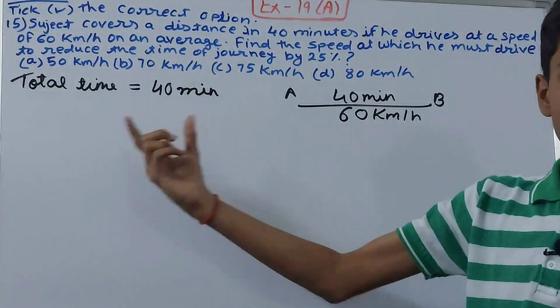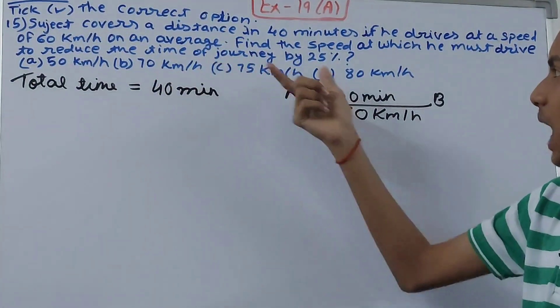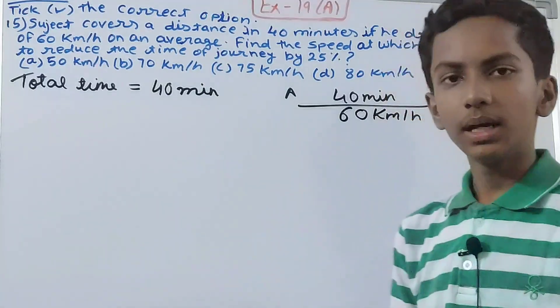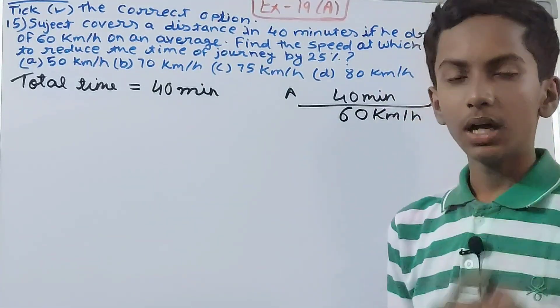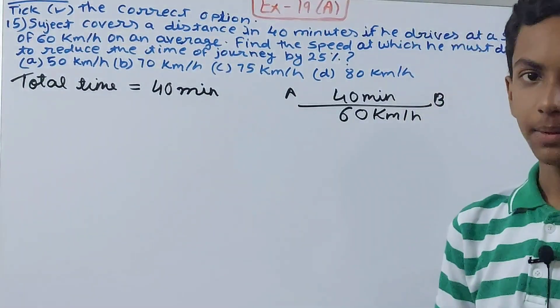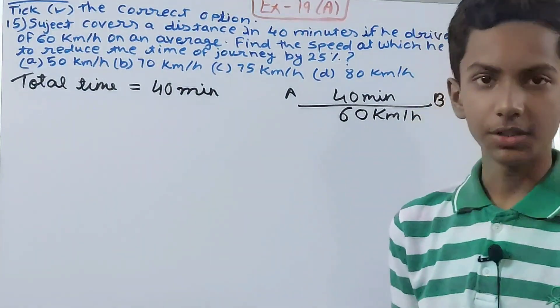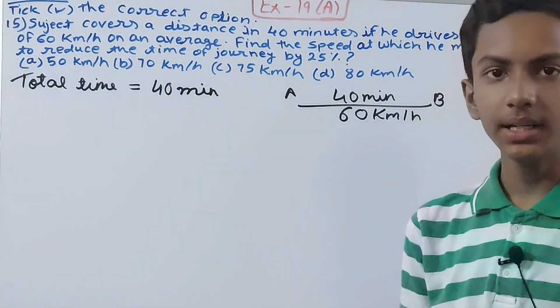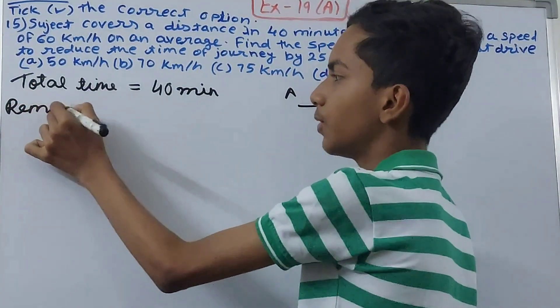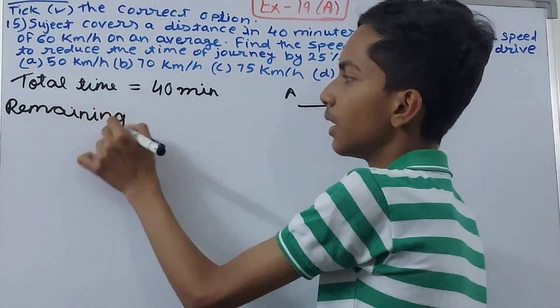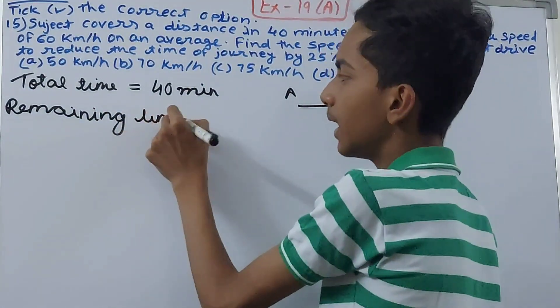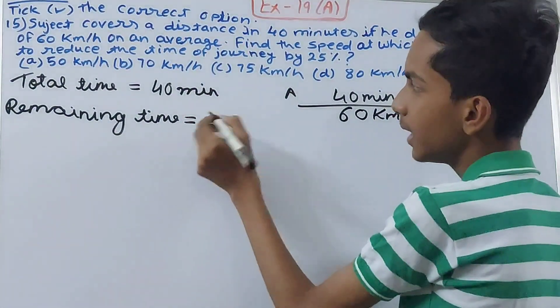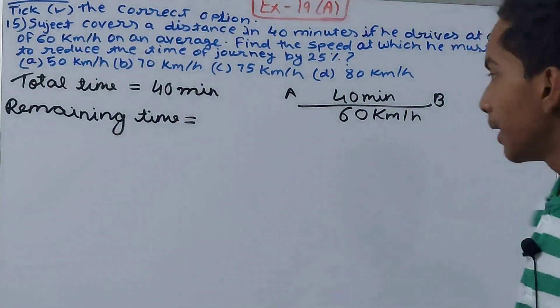So it says to reduce the time of journey by 25 percent, we have to reduce 25 percent from 40 minutes. That will be 75 percent of 40 minutes, the remaining time. There are two ways in which we can find the remaining time, because we cannot take the entire 40 minutes since we have to reduce it by 25 percent.